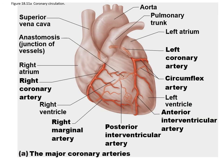Because the heart is constantly beating and doesn't really fatigue like skeletal muscle, it needs a lot of oxygen so it has its own circulation. This circulation starts from branches off the aorta — the left coronary artery and the right coronary artery — which are the very first branches off the aorta right above the aortic semilunar valve.